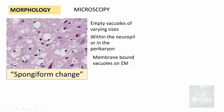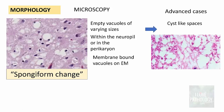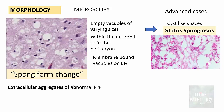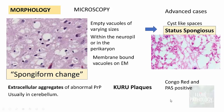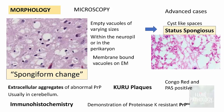Ultrastructurally, these vacuoles are membrane-bound. In advanced cases, the vacuoles fuse together to form larger cyst-like spaces, a condition referred to as status spongiosis. The abnormal prion protein PRPSC can also be seen as extracellular aggregates, usually in the cerebellum; these are called kuru plaques. Kuru plaques can be demonstrated by Congo red or PAS staining, both of which are positive.